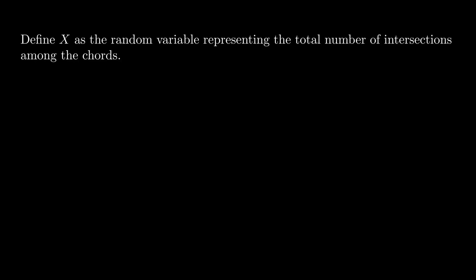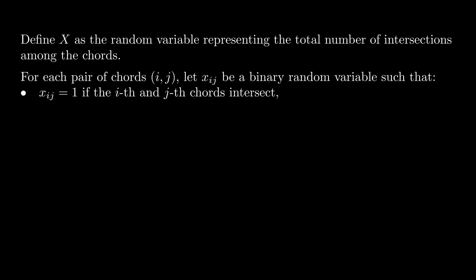Here's the solution. Define X as the random variable representing the total number of intersections among the chords. For each pair of chords (i, j), let xij be a binary random variable such that xij equals 1 if the i-th and j-th chords intersect, and xij equals 0 otherwise. Such variables are also known as indicator variables, so X equals summation xij over all pairs of chords.